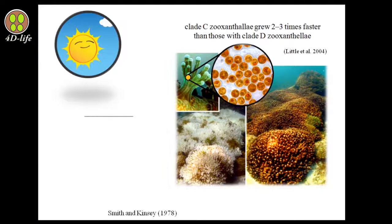The presence of zooxanthellae is necessary for reef establishment. Little et al. in 2004 found that the clade of zooxanthellae is essential for the growth of juvenile coral colonies. They observed that corals with clade C zooxanthellae grow two to three times faster than those with clade D zooxanthellae. Calcification is measurable in coral.